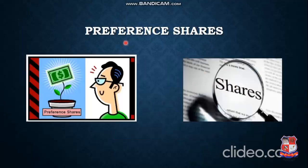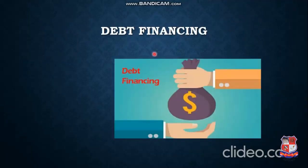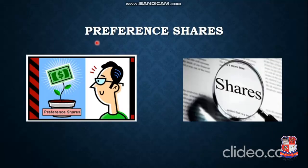One more source is preference shares. Preference shares give the advantage of both equity financing as well as debt financing. It shares the advantage of equity financing — that is, becoming an owner — and the advantage of debt financing — that is, getting some amount of interest money. So in preference shares, after investment, the investor becomes an owner and also gets some amount of money for a certain time. Preference shares are more beneficial than debt finance and equity finance because they combine the advantages of both previous methods.